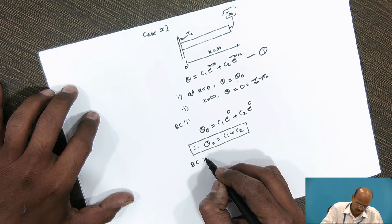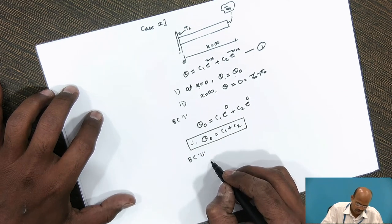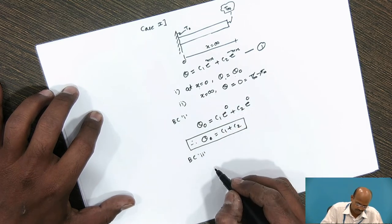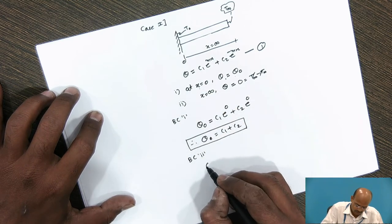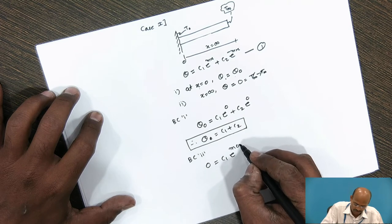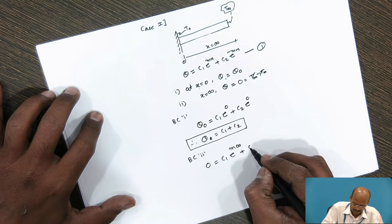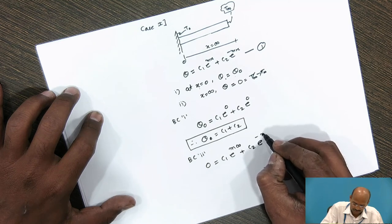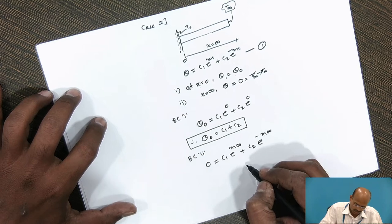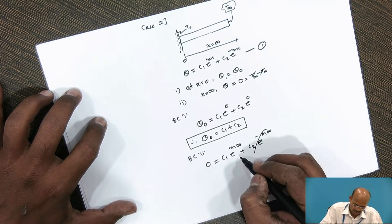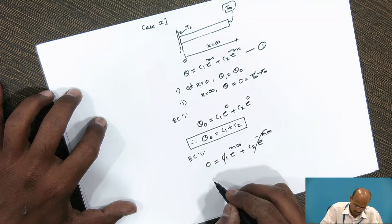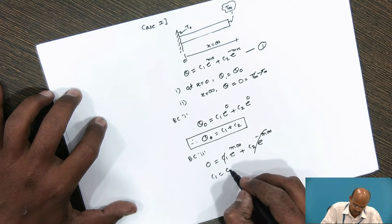Using the second boundary condition, at x = ∞, θ becomes 0. So we write: 0 = C₁·e^(m·∞) + C₂·e^(−m·∞). The term e^(−m·∞) is 0, and since e^(m·∞) cannot become 0, C₁ must equal 0.